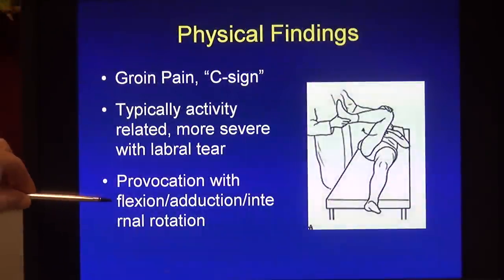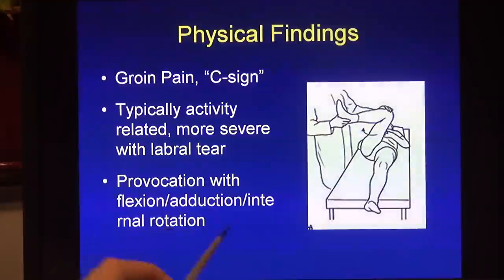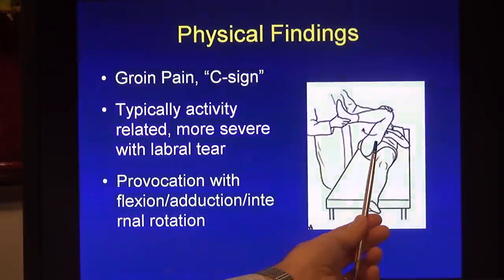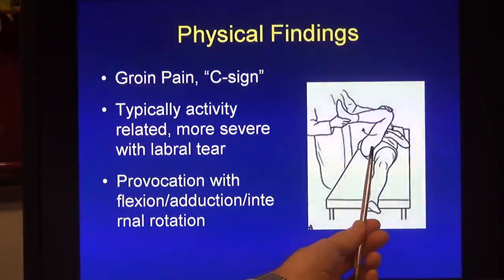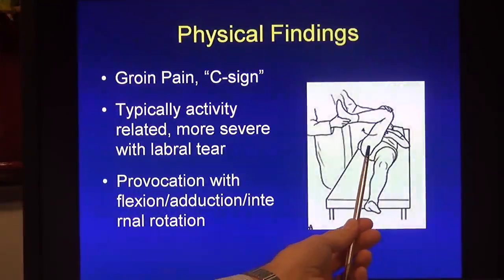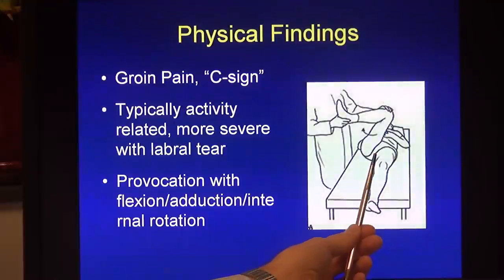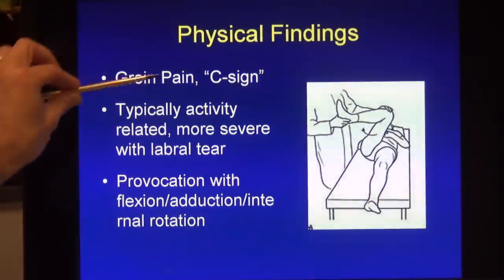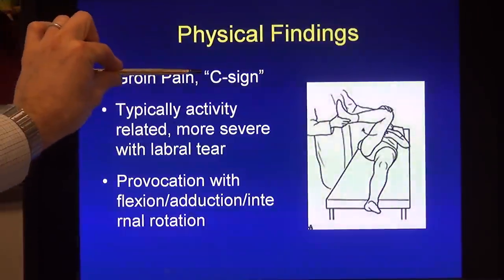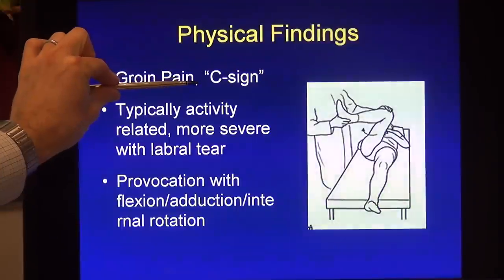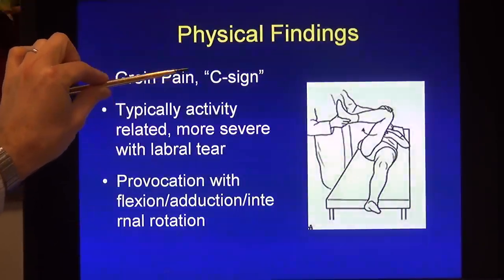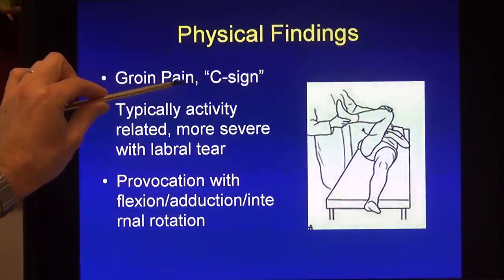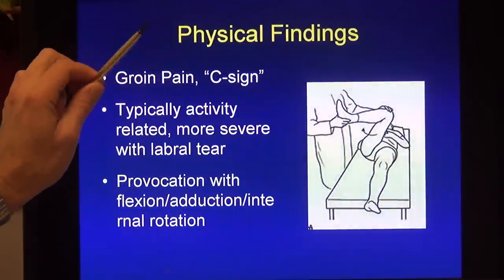Provocative testing for femoroacetabular impingement can be performed by flexing the hip to about 90 to 100 degrees, internally rotating it, and adducting the hip. That results in either groin pain or pain such as is found in the C sign. But most importantly, it reproduces the symptoms that the patient has.